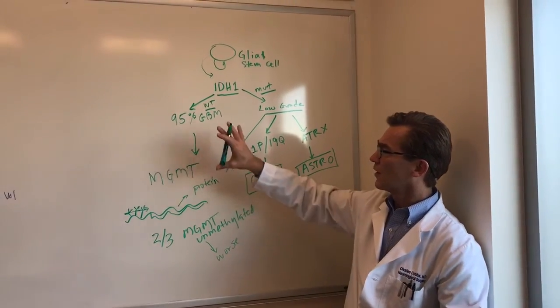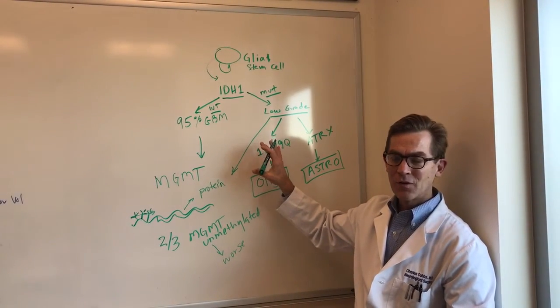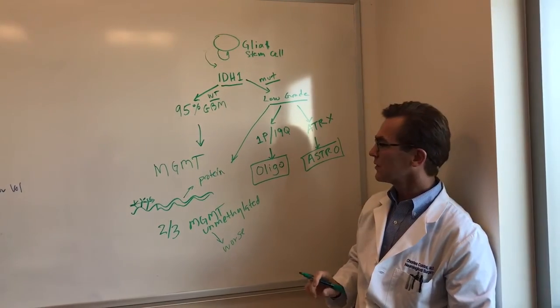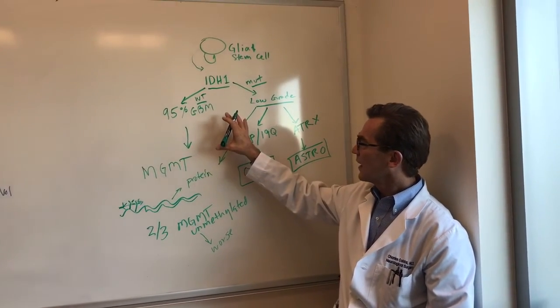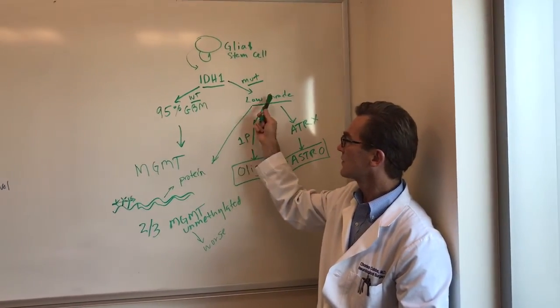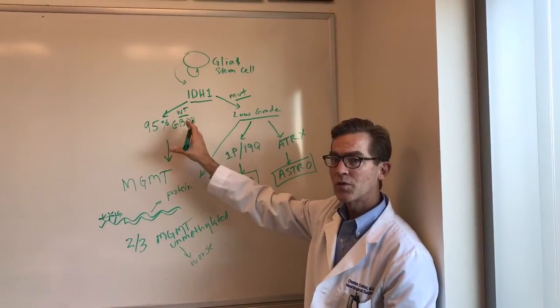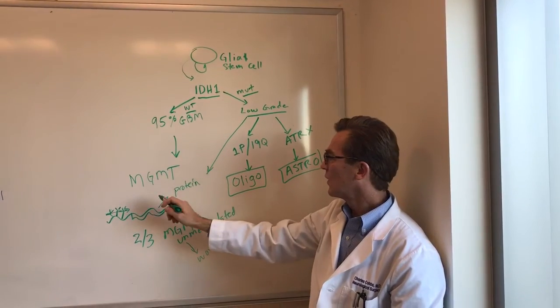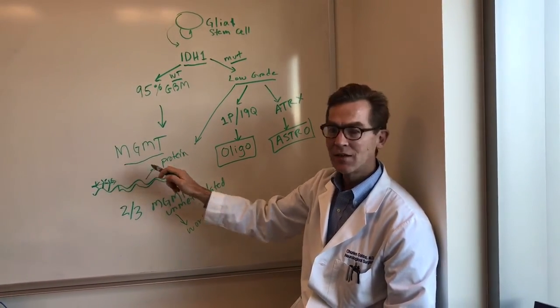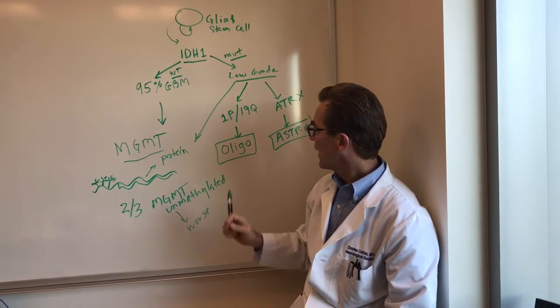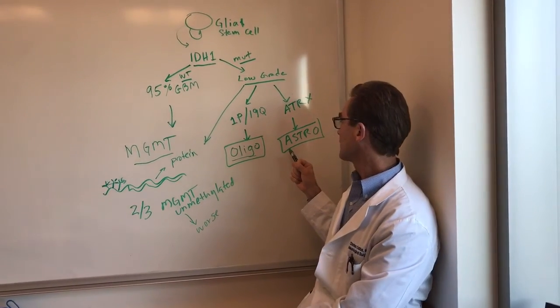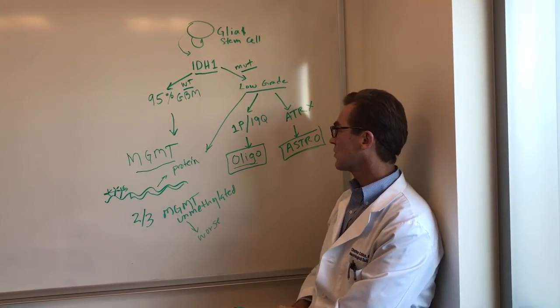So long story short, because of these molecular markers, which are really done mostly only at advanced brain tumor treatment centers, we can get a very clear understanding of what type of tumor it is, even if it looks the same under the microscope, what the prognosis is going to be, whether or not the person might respond to chemo based on the MGMT gene methylation, and whether it might be needing to be treated like an oligodendroglioma, which is a different type of tumor than an astrocytoma.